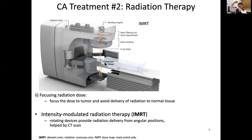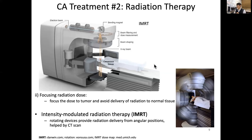If the tumor is inside, we shine one time in one direction. For example, if this is a brain with a tumor in the middle, we shine once — exposing normal tissue before and after the tumor. When we rotate to another direction, the normal tissue is only exposed once, while the tumor tissue is exposed twice. By rotating this radiation, we can accumulate dose at the tumor.